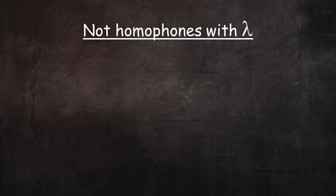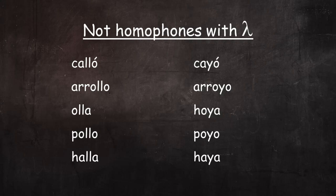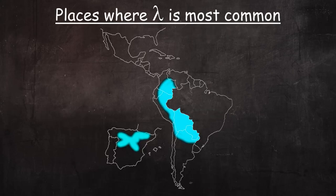One interesting thing to note is that there are word pairs that are homophones in most Spanish dialects, but that are pronounced differently from one another in dialects that pronounce elie. Here are some regions in Spain and Latin America where dialects with elie are most common. Please understand that these may not be the only places in the Spanish-speaking world where people use elie, and it is certainly not true that everyone in these regions uses it. These are just the places where elie is traditionally most often heard.